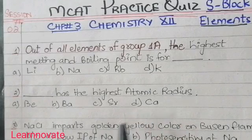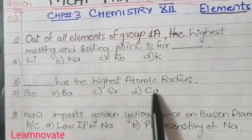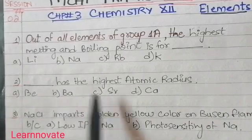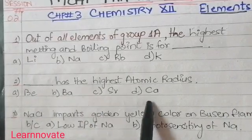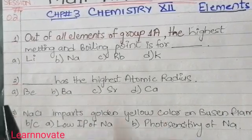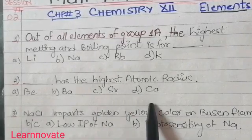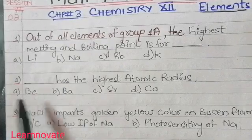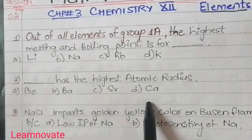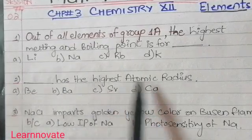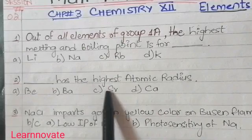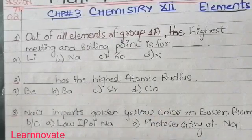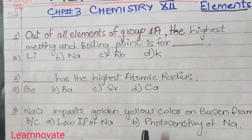The next question says: which has the highest atomic radius? A - Beryllium, B - Barium, C - Strontium, D - Calcium. This is Group 2A, in which there is a series of elements, the first being Beryllium. Which of the following has the highest atomic radius? This can be decided on the basis of atomic number and number of electrons in the outer shell.